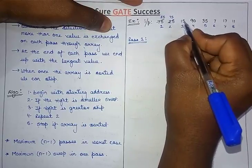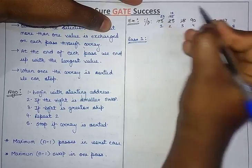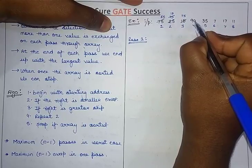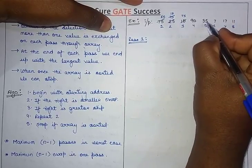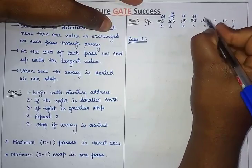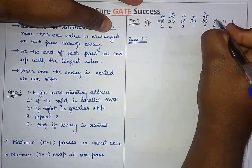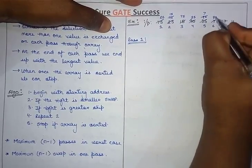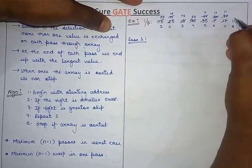Similarly, you can see that the right value 15 is smaller, so we have to swap it. Now you can see that 90 is greater — the right value is greater, so no need to swap. Similarly, 35 is smaller than 90 so we have to swap that value. Now again 7 is smaller than 90, so we swap 7 with 90. Similarly 17 is smaller so we swap it again. And 11 is also smaller so we swap it again.